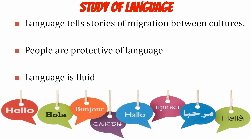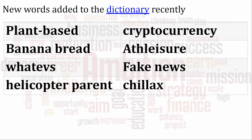Language is fluid — it's always changing as new things are invented and new words are created. Words added this year to the Oxford English Dictionary include: plant-based, cryptocurrency, banana bread, athleisure, 'whatevs,' fake news, chillax, and helicopter parents. These all had to be added because they were new words. Language is ever-changing.